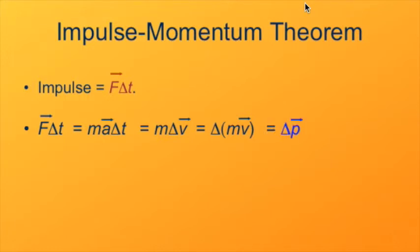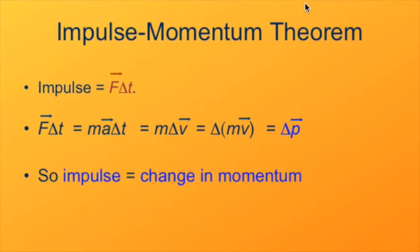So what we just showed in a very short sequence of transformations is that impulse is the change in momentum. Both impulse and momentum are vectors. They're in the same direction.